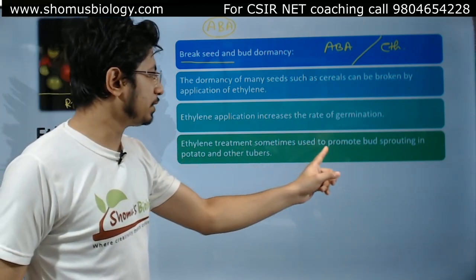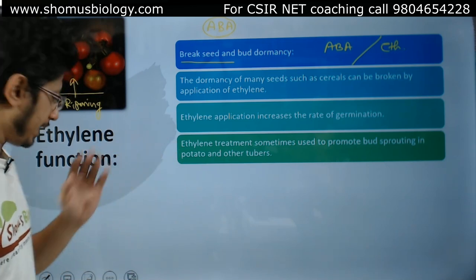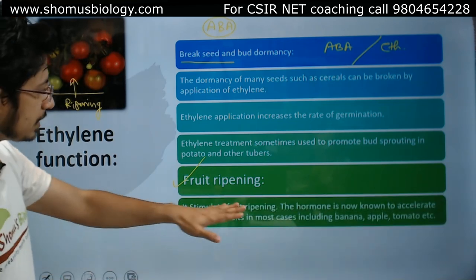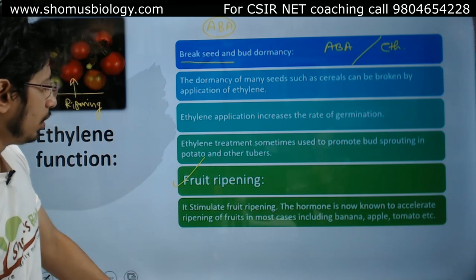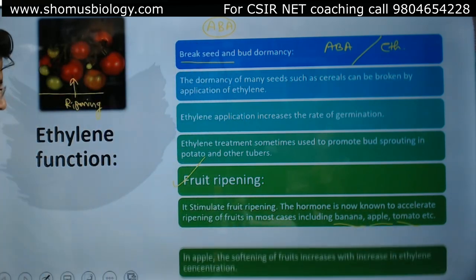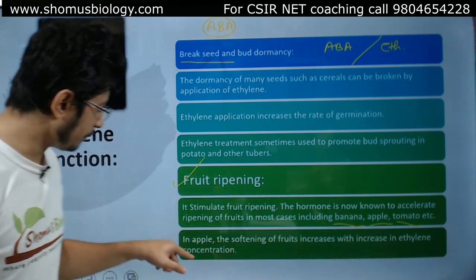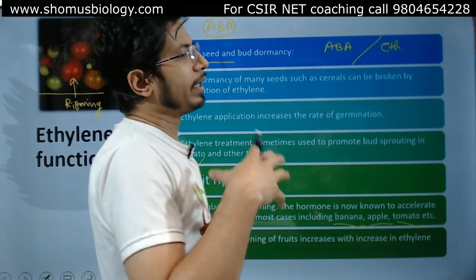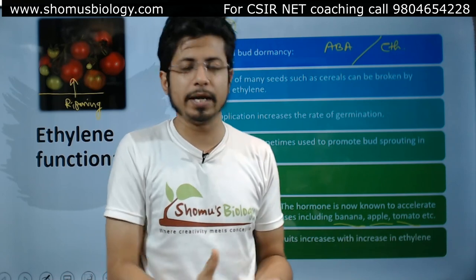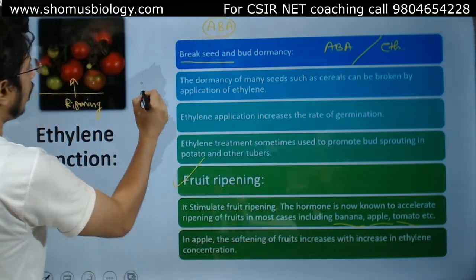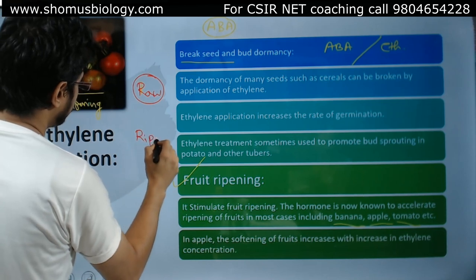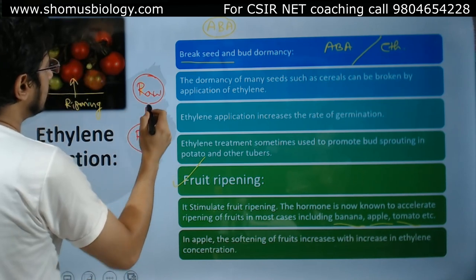Fruit ripening is a major effect of ethylene. It stimulates fruit ripening and is known to accelerate ripening in most cases including banana, apple, and tomato. In apple, softening of the fruit increases with increasing ethylene concentration. Ethylene in higher concentrations modifies plant tissue type, changing the composition of the fruit.